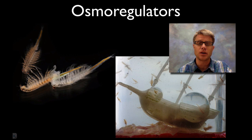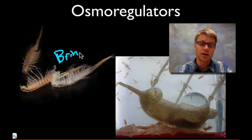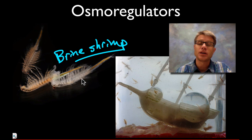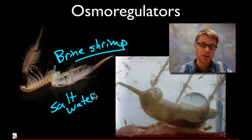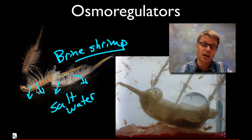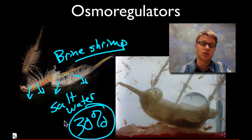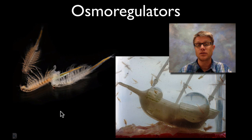A lot of organisms are what are called osmoregulators. A great example would be the brine shrimp found in salt water, such as in the Great Salt Lake. They have to regulate the amount of water inside them. They live in a saltwater environment, so water is constantly being lost — it's going to flow out of them. They have to do a lot of effort; in fact, 30% of their metabolism just goes to regulating this balance of osmolarity.